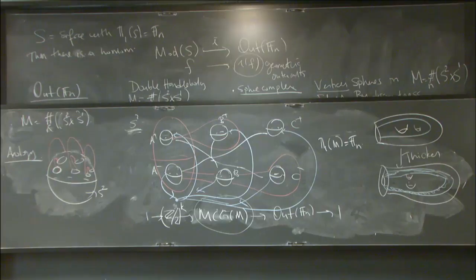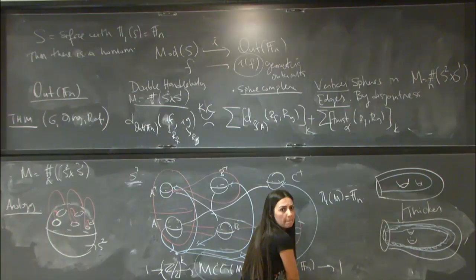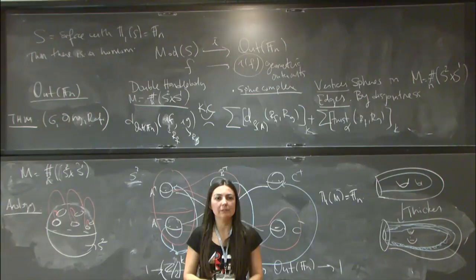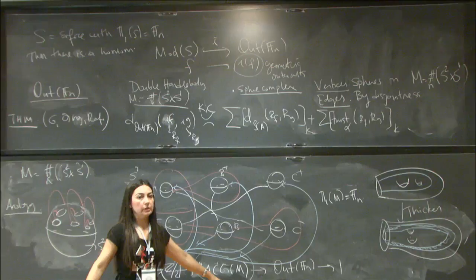Is it known how large the group of geometric Out(F_n) is inside Out(F_n)? It's big. The kernel, when comparing the mapping class group to Out(F_n), is huge — you're not going to have a nice finite kernel there. There's a lot of research being done on that kernel. We'll break for tea, and at 4:30 we have an introduction session in the dining room.